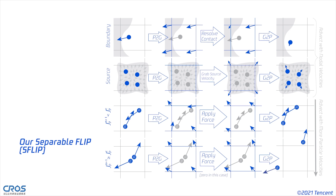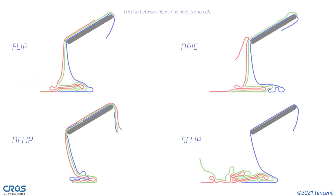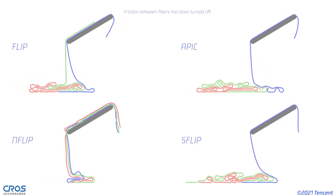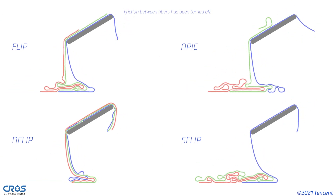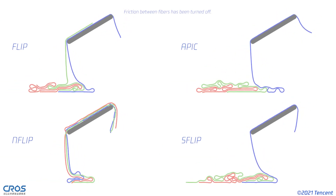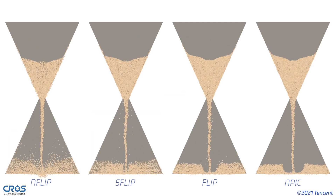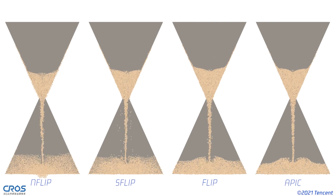Otherwise, as the particles tend to expand, we mix the advection with more particles' velocities. Back to this fiber-piling example, fibers simulated with SFLIP slide down much faster than FLIP and APIC, while collisions are also correctly handled. In this hourglass, NFLIP and SFLIP produce more flying particles, while SFLIP correctly handles the boundary condition.